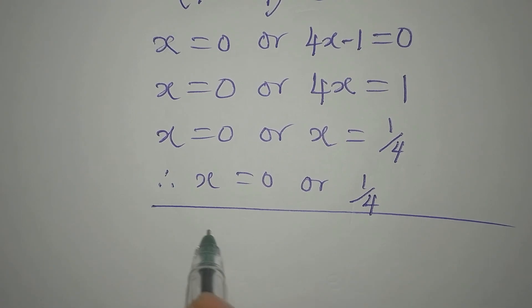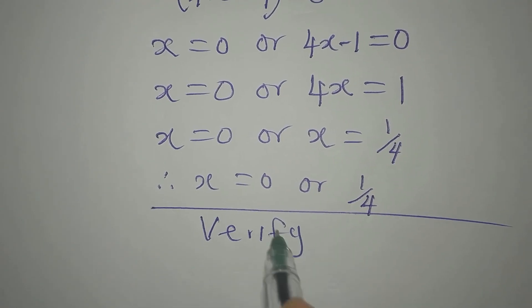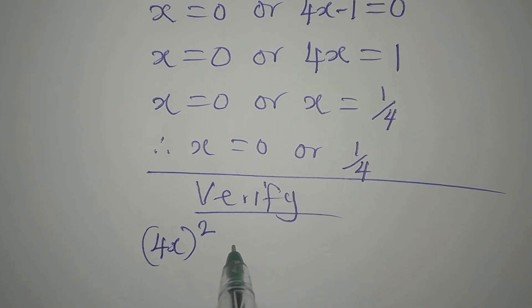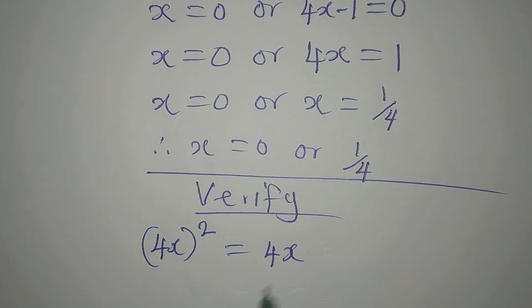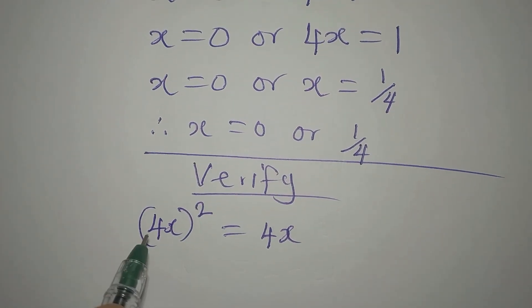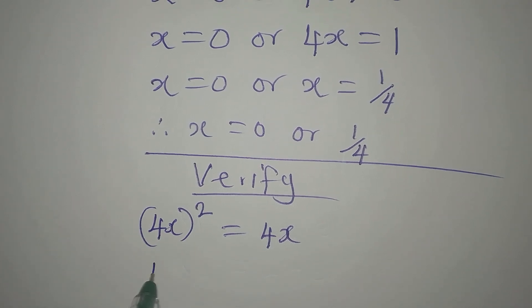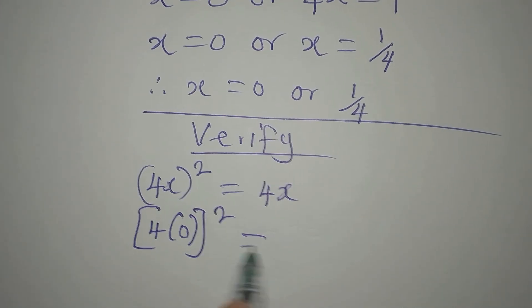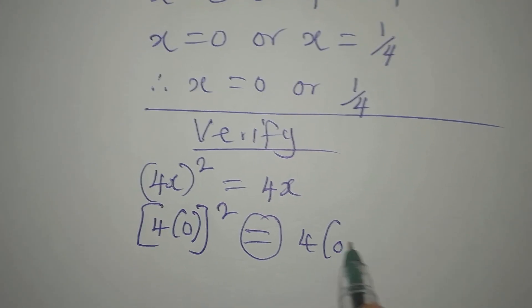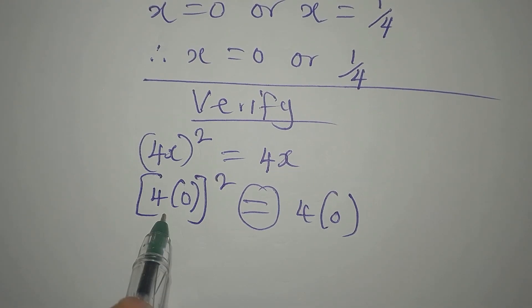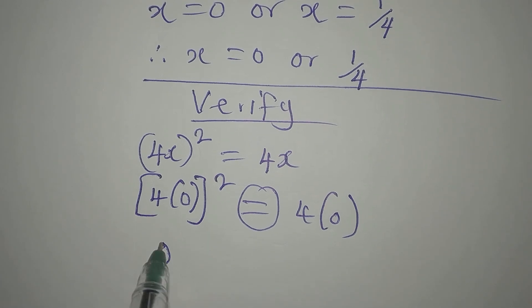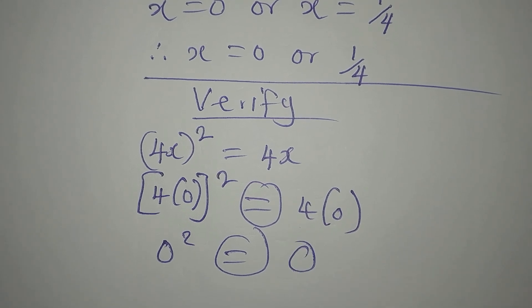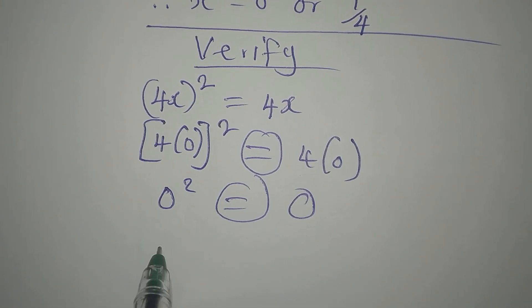Like we always do, let's verify our work. We had (4x)² = 4x. If we put 0, we get (4×0)² = 4×0. That's 0² = 0, which is 0 = 0. So x = 0 satisfies the equation.